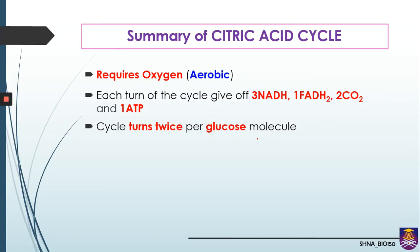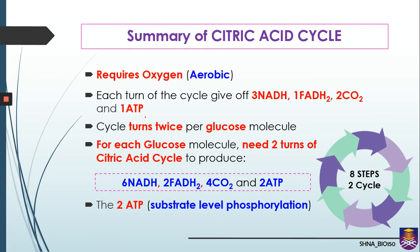In summary, the citric acid cycle requires oxygen and is part of aerobic respiration. Each turn of the cycle produces three NADH, one FADH2, two carbon dioxide, and one ATP. Since the cycle turns twice per glucose molecule, one glucose yields six NADH, two FADH2, four carbon dioxide, and two ATP from the citric acid cycle, with ATP produced via substrate-level phosphorylation.